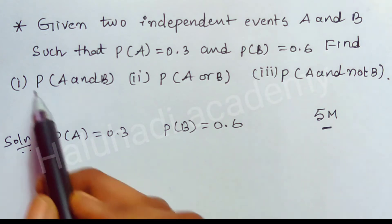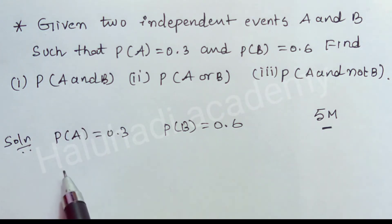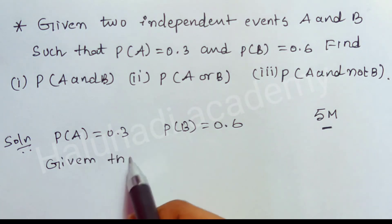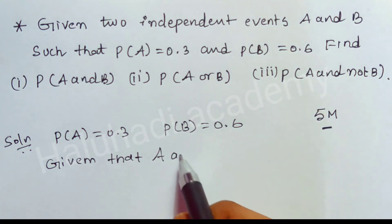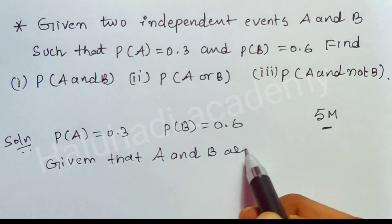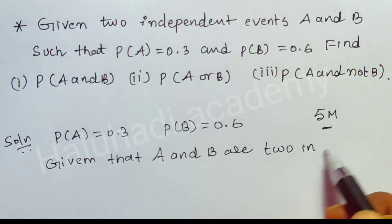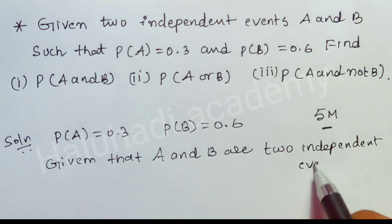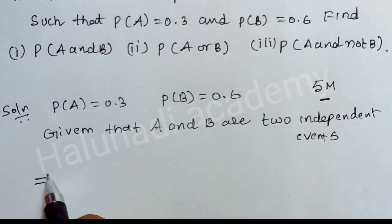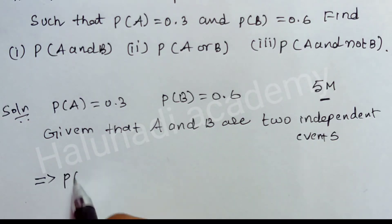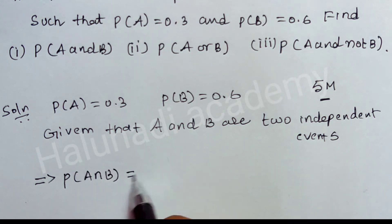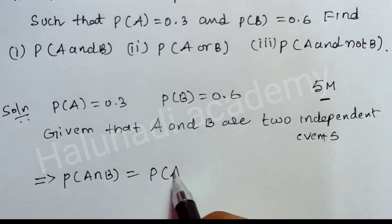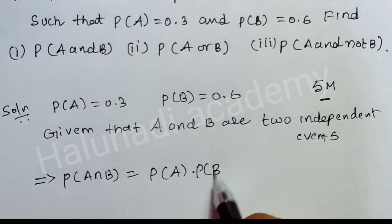So first we will find out P of A and B. The condition given is that A and B are two independent events. For independent events, that implies P of A intersection B equals P of A into P of B.